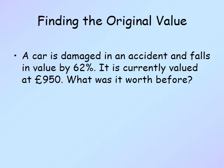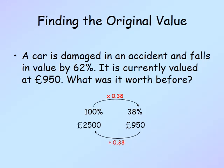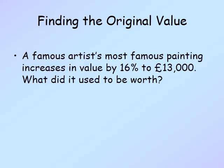In this example a car is damaged in an accident and falls in value by 62 percent. It is currently valued at £950 and we want to know the original amount. The fall is 62 percent, so the remaining value is 38 percent. The original figure was multiplied by 0.38 to get to £950, so we must divide 950 by 0.38 to get the original figure, which was a substantial £2,500. It was worth £2,500 and then the damage took place — it is now worth £950.